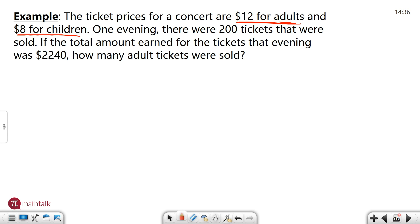One evening there were 200 tickets that were sold. That's key. The total amount earned for the tickets that evening was $2,240. That's important. How many adult tickets were sold? So that's going to be the key thing. There's two types of tickets in this problem. There's adult tickets and then there's children's tickets. We need to find the price for adult tickets only. So let's look at what we have and let's use that information to solve.